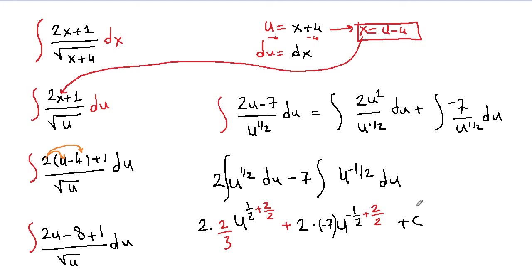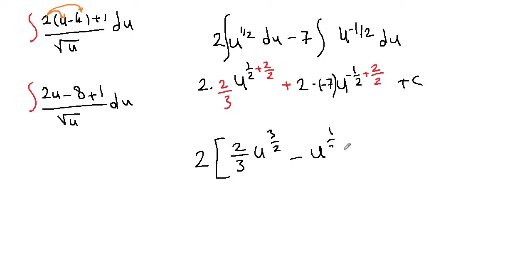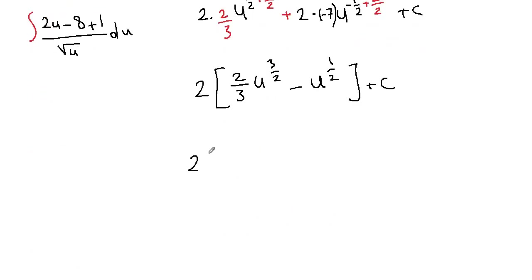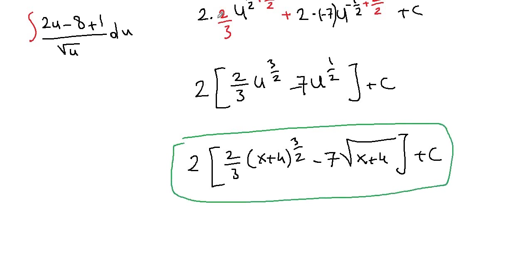Plus C. So this is our final integral in terms of u, but we need to simplify and bring u back. We can factor out 2, and write (2/3) u^(3/2) minus 7 u^(1/2) plus C. Since our u was x plus 4, we substitute back: (2/3)(x plus 4)^(3/2) minus 7 times square root of (x plus 4) plus C. You can consider this your final answer, unless you'd like to distribute further.